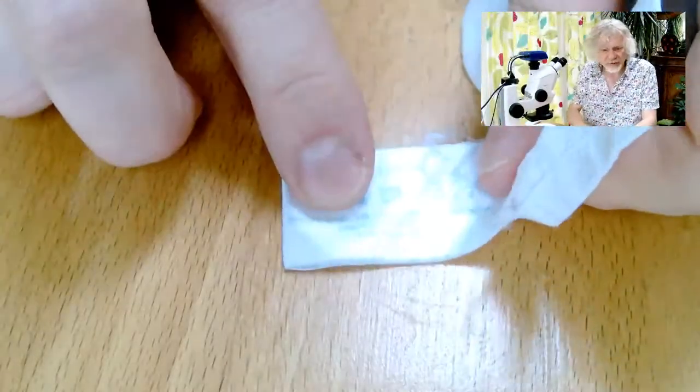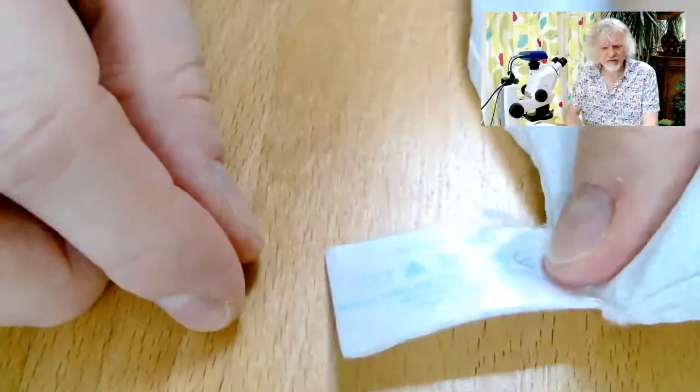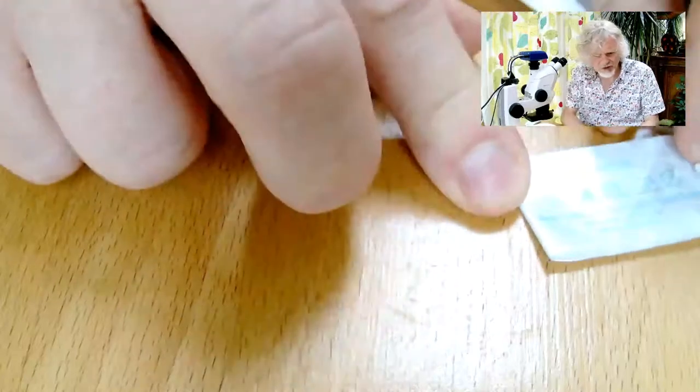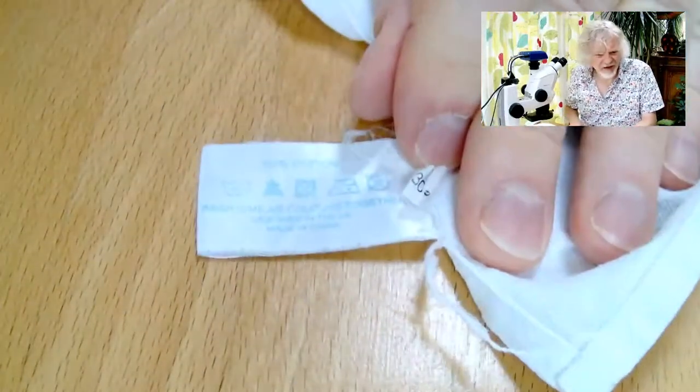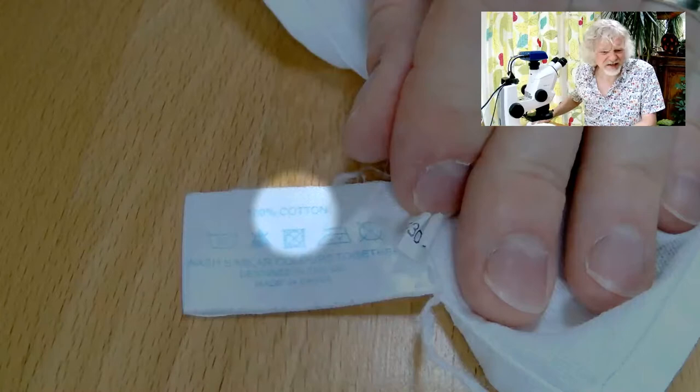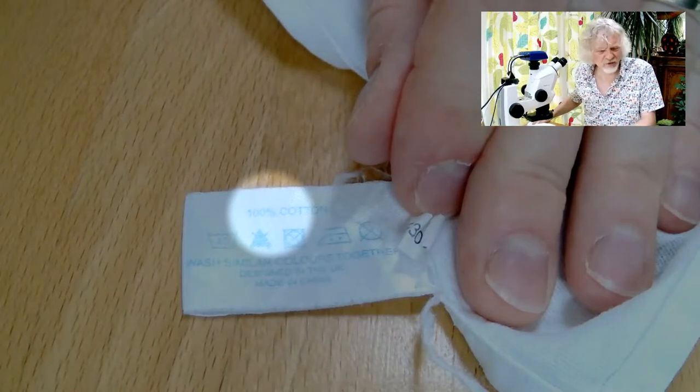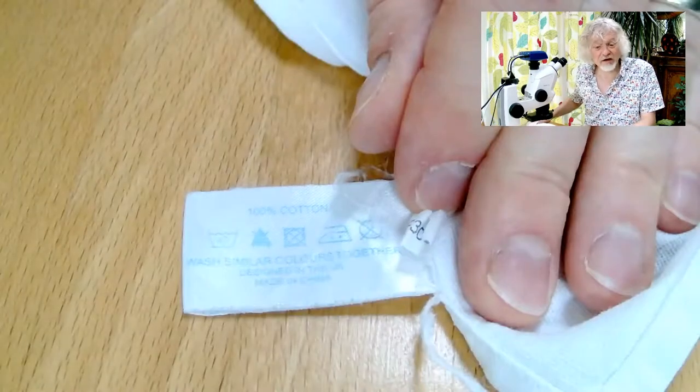So if I go to my desk camera, it's a bit shiny let's get it over here. Can you see that? It's quite faint, it's been washed several times, 100% cotton. That's the important thing, this is made of 100% cotton, so let's get that under the microscope.